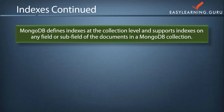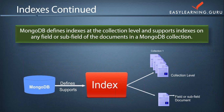MongoDB defines indexes at the collection level and supports indexes on any field or subfield of the documents in a MongoDB collection. MongoDB supports secondary indexes and can create indexes on fields such as embedded sub-documents. For example, if we have a collection with an employee document that has a sub-document called 'department', MongoDB also supports indexes on that sub-document's field, such as the department ID field.